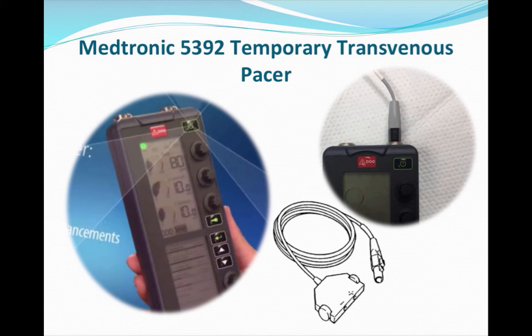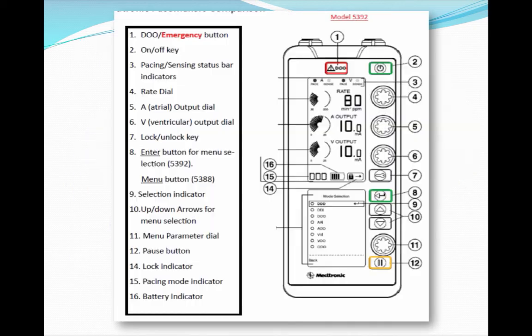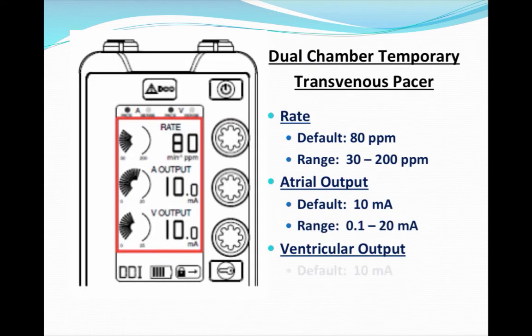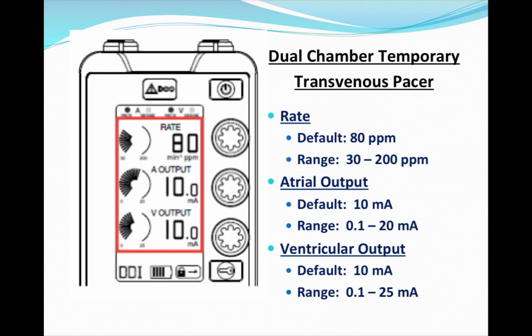Now we've got the pacing wire in and connected to the box. There are a lot more buttons on this one than we're used to. On the top, you've got the rate and both atrial and ventricular output knobs. The default rate is 80 paces per minute, and it can go as low as 30 or as high as 200 beats per minute. The atrial and ventricular output both default to 10, with ventricular output going up to 25 and atrial output up to 20.